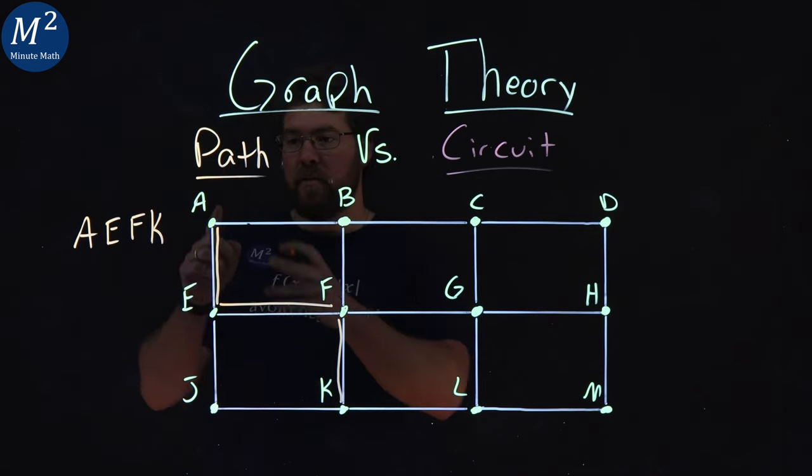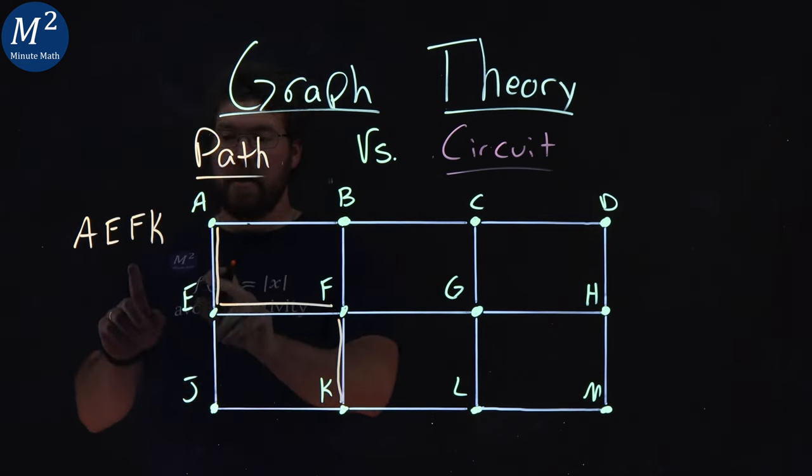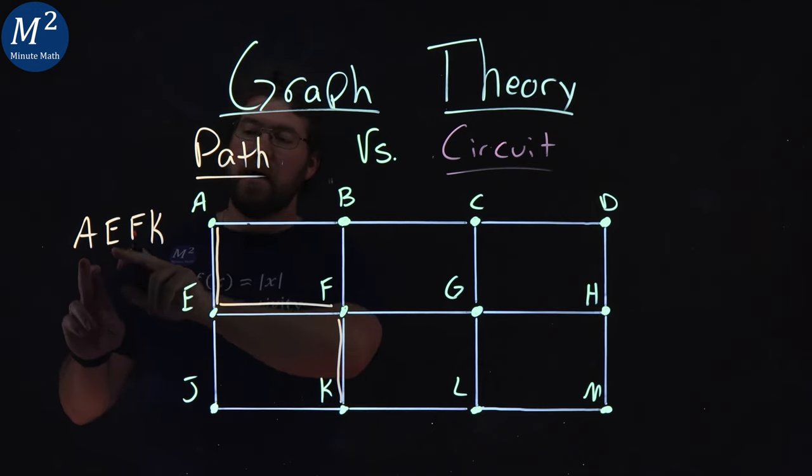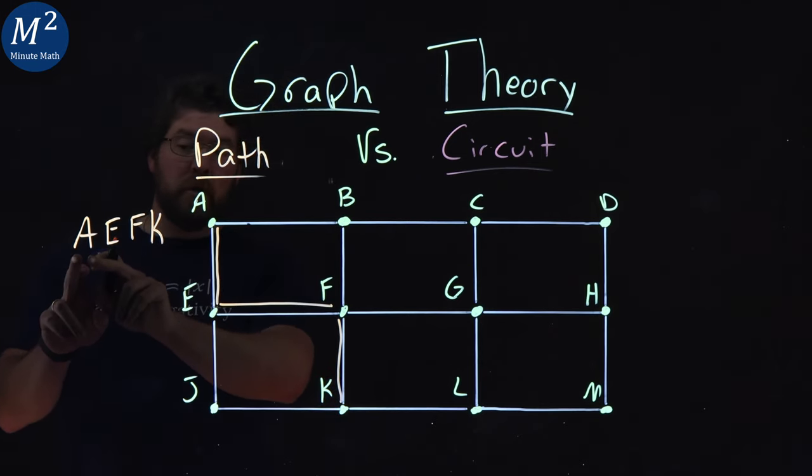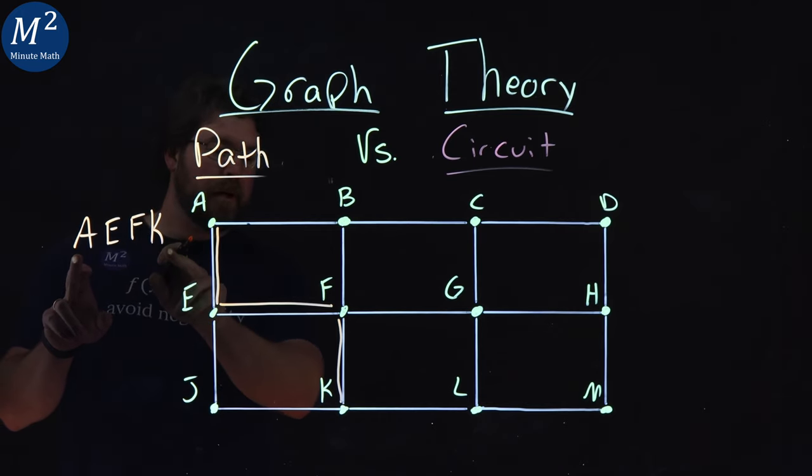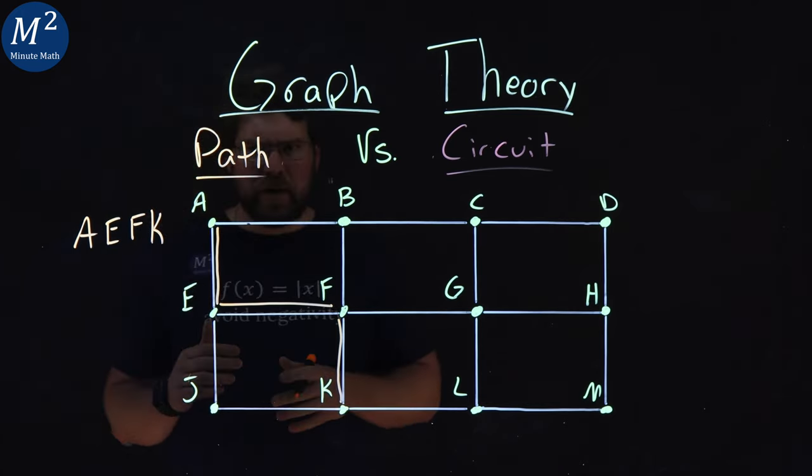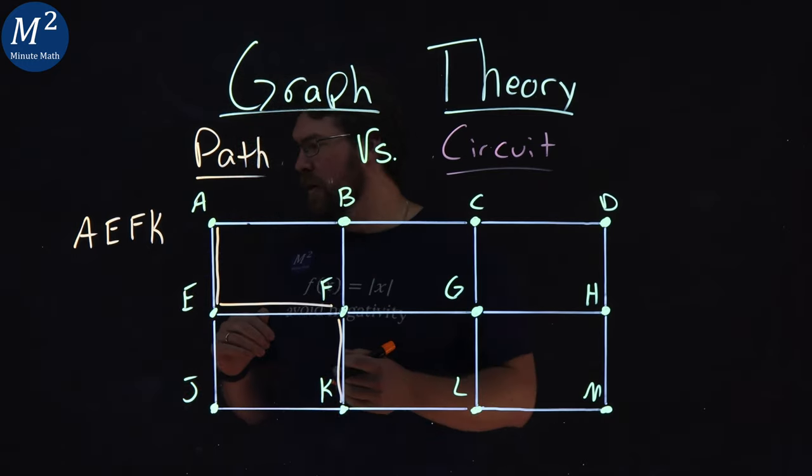There's many paths, but that's a path from A to K, A to E to F to K. And we can denote that with our vertices labeled A to K in that order here. So a path is basically going from one point to another point.